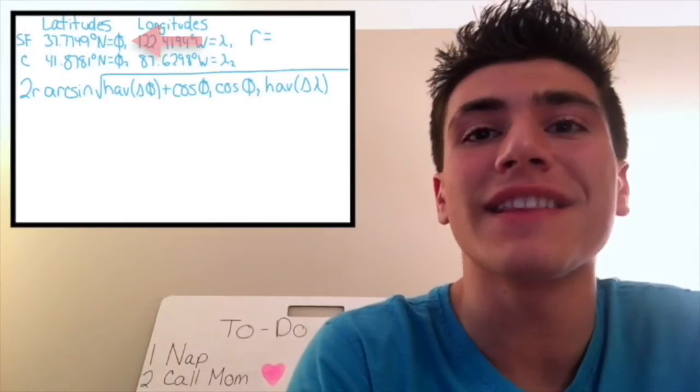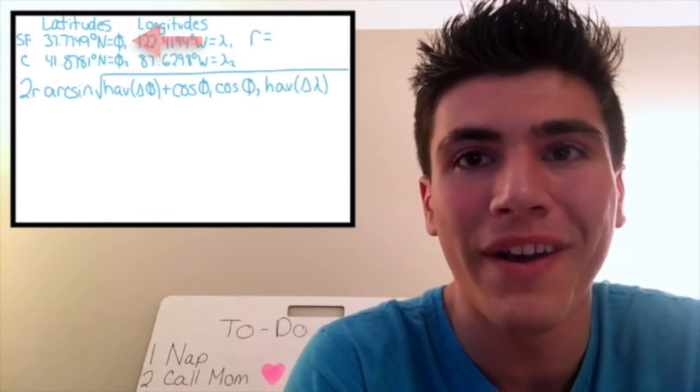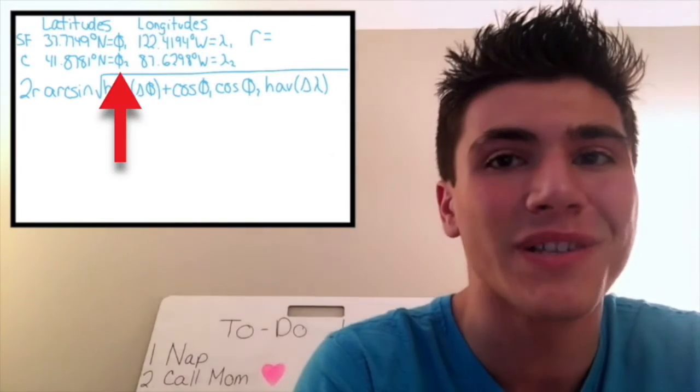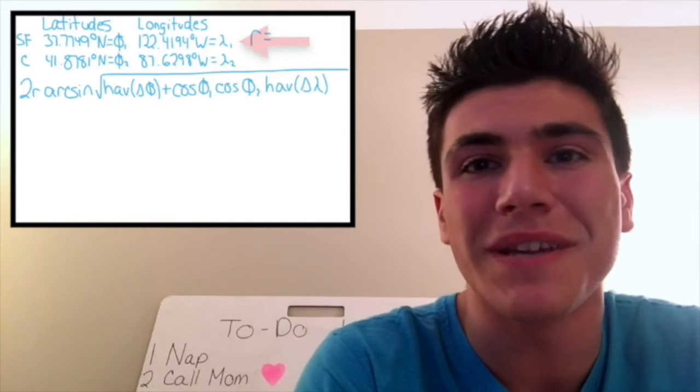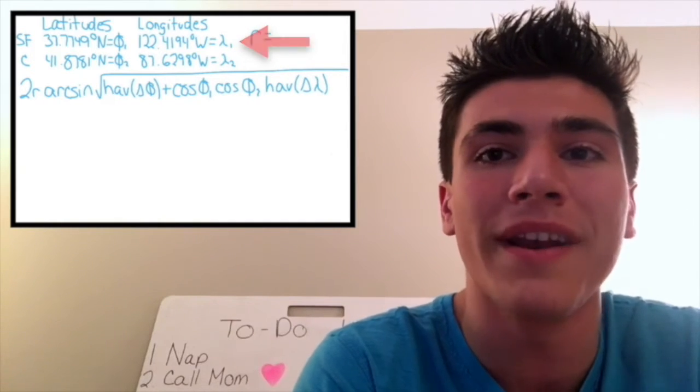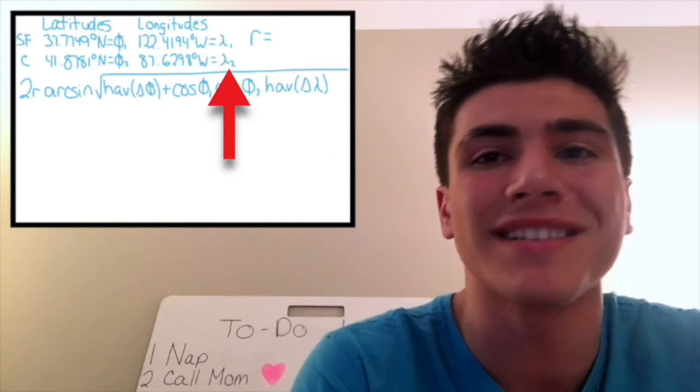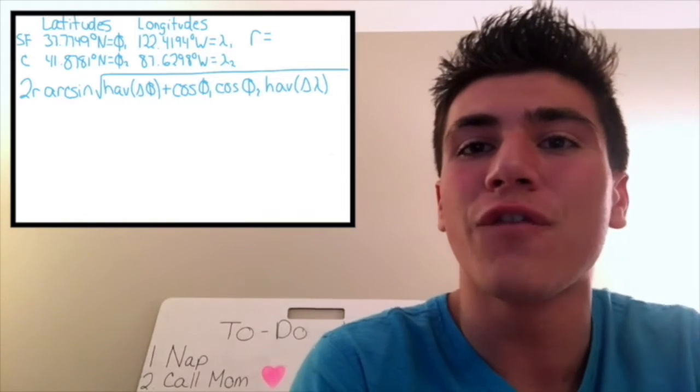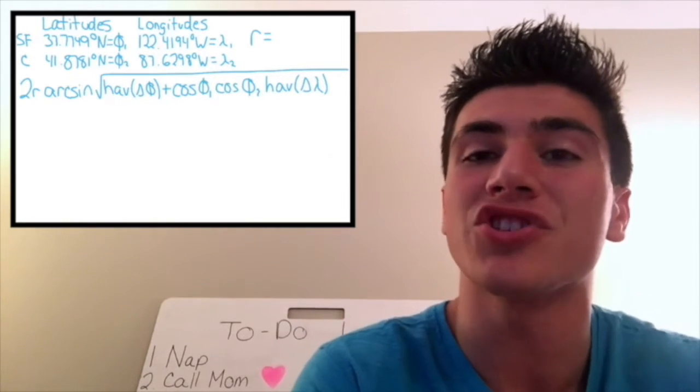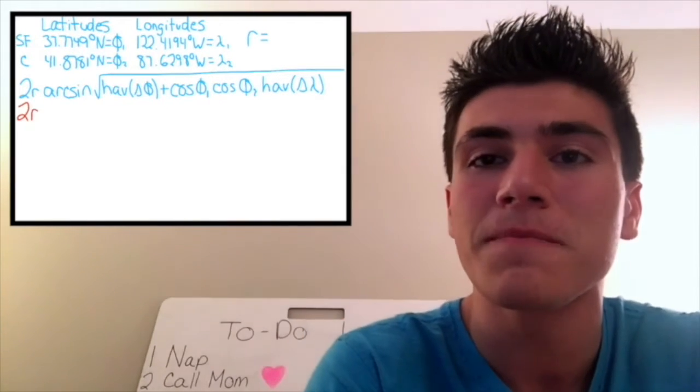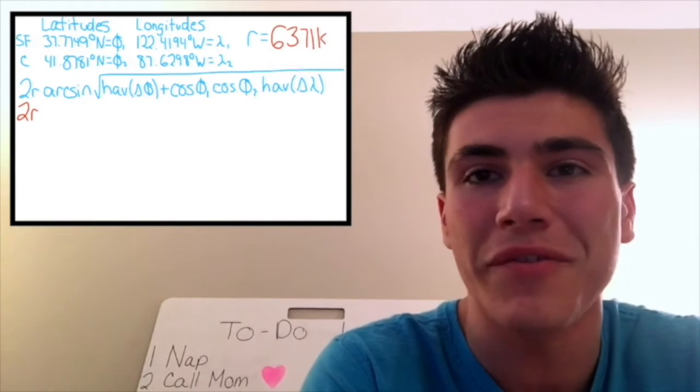Now, I'm going to define the latitude of San Francisco as Phi-1, the latitude of Chicago as Phi-2, the longitude of San Francisco as Lambda-1, and the longitude of Chicago as Lambda-2. Now, the formula for the law of Haversines is 2 times the radius of Earth, which is 6,371 kilometers,